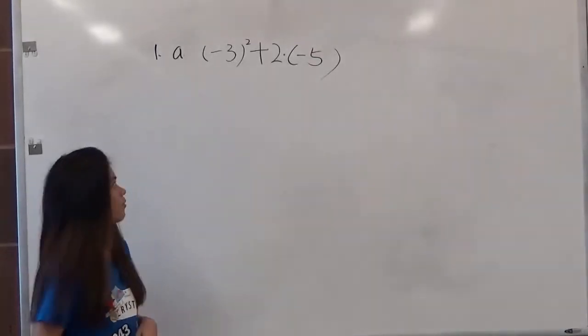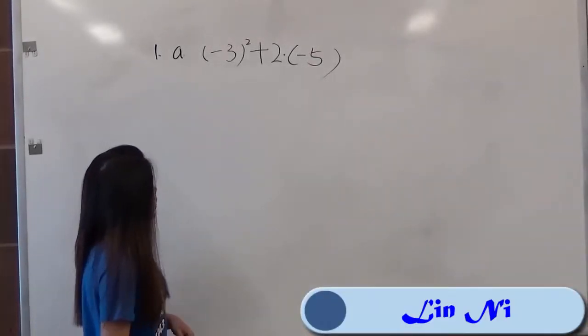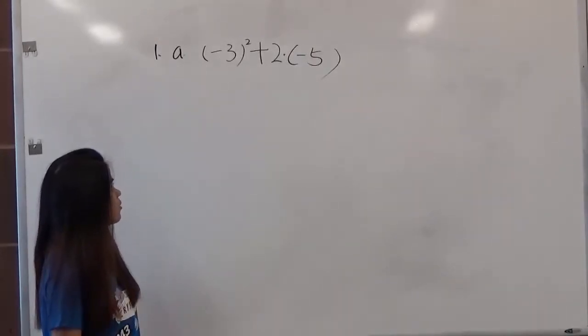Hello, welcome to helpyourmath.com. Let's look at problem 1a: negative 3 squared plus 2 times negative 5.